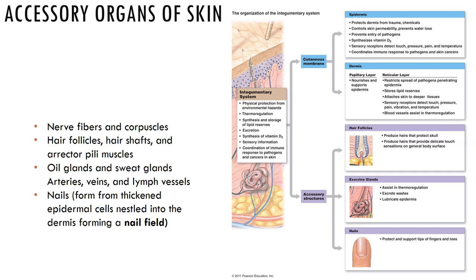The accessory organs of the skin include nerve fibers and corpuscles, hair follicles, hair shaft, arrector pili muscles, oil and sweat glands, arteries, veins, lymph vessels, and nails, which are formed from thickened epidermal cells extending into the dermis to form a nail field.